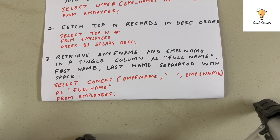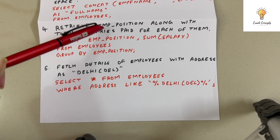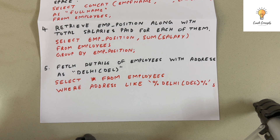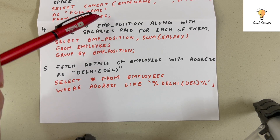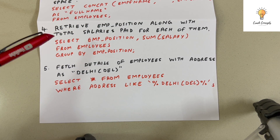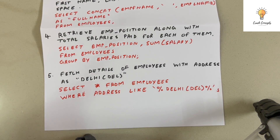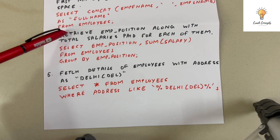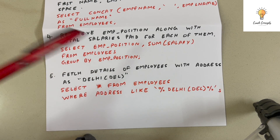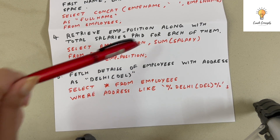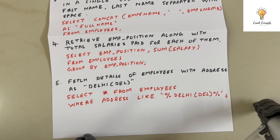The fourth query: retrieve employee position along with total salaries paid for each. The main thing is total salary — we need to SUM salaries for each employee position. The query: SELECT employee_position, SUM(salary) FROM employees GROUP BY employee_position. We use GROUP BY because we are using the aggregate function SUM.